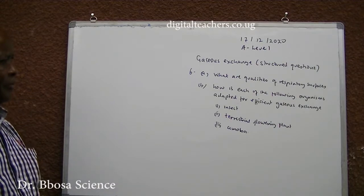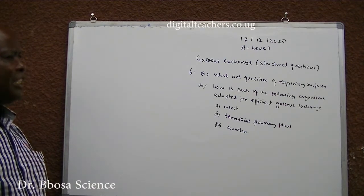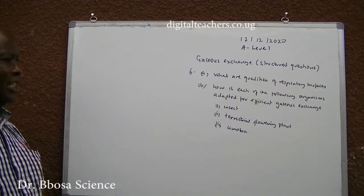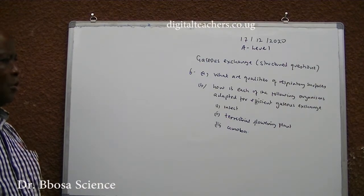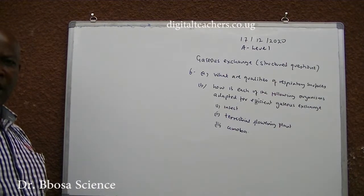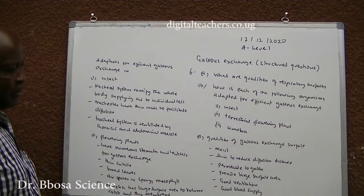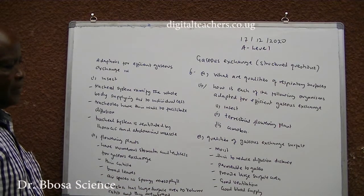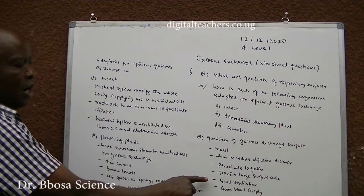Number 6: What are the qualities of a respiratory surface? Qualities of a gaseous exchange surface: 1. It is moist. 2. It is thin to reduce diffusion distance. 3. It is permeable to gases. 4. Provides a large surface area. 5. It should have good ventilation. 6. And good blood supply.